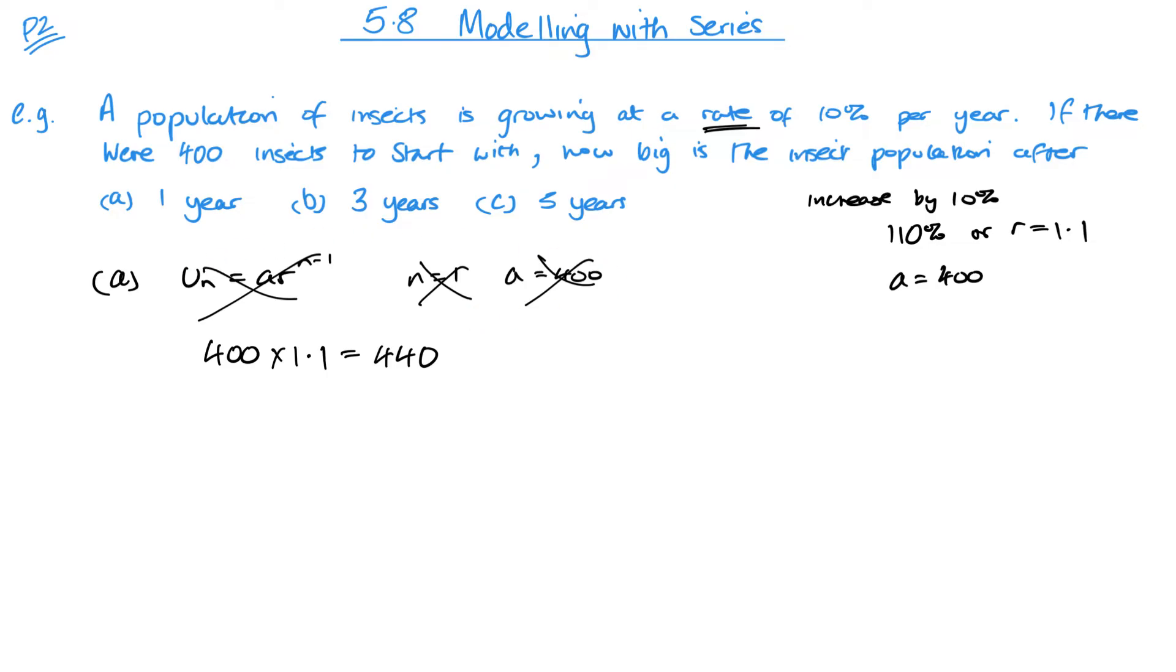If we'd used this method, we would actually have to use n equals 2, as n equals 1 would have been for the initial year. Now for three years, it's just going to be 400 times 1.1 to the power of 3, which is 532.4, which I'll round to 532 to the nearest whole, since we're talking about insects. And then finally, 400 times 1.1 to the power of 5 gives me 644.2, which again is 644 to the nearest whole value there.